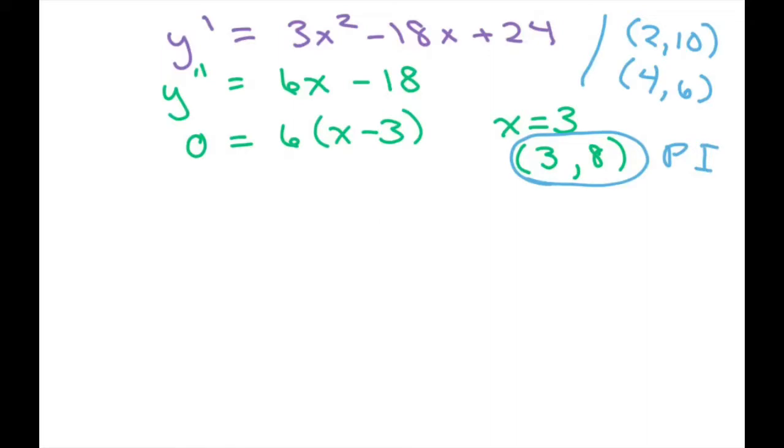So now we want to plug in our two x's here, our critical values 2 and 4, into our second derivative and see what's going on there. If I plug in 6 times 2 minus 18, that equals negative 6. This is negative, so that means we have a max at the point (2, 10), and it's concave downward.